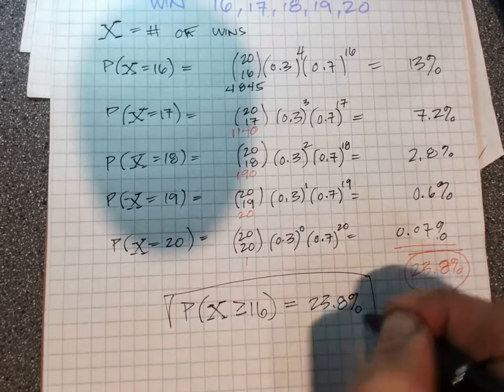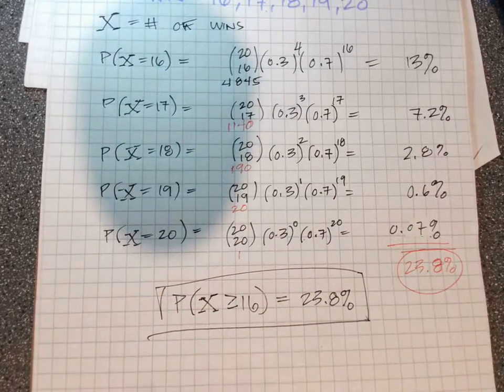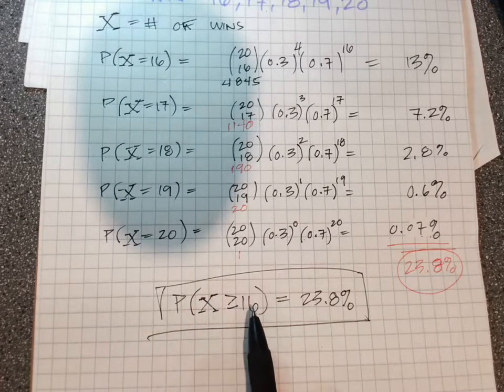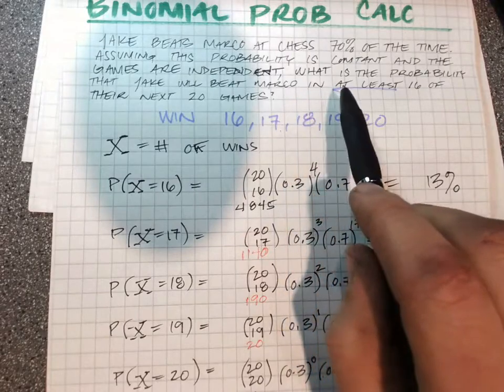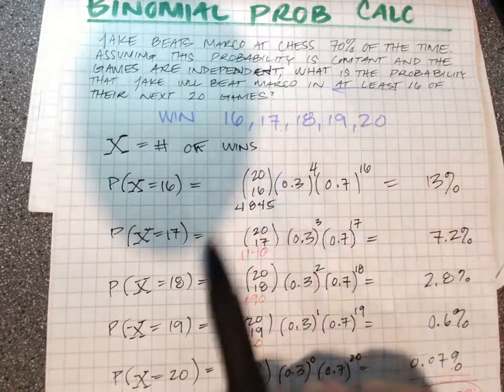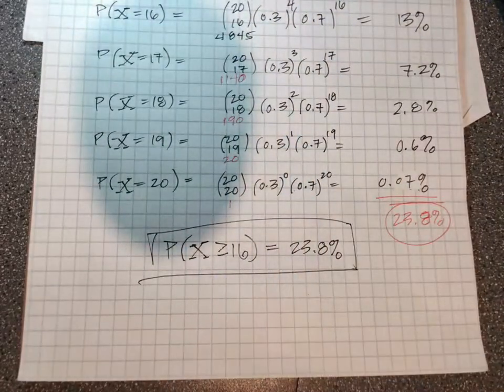Okay, so that is a relatively concise, extremely concise way to summarize the statement here. Probability that he beats Marco in at least 16 of their next 20 games is 23.8%.